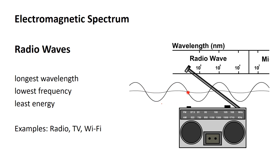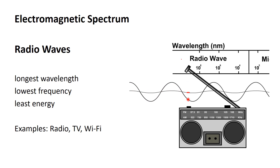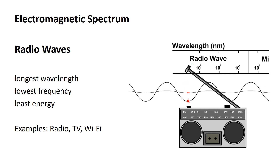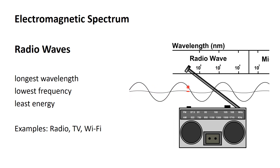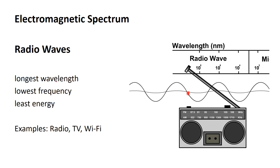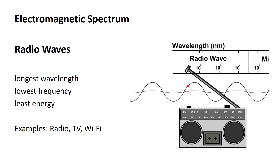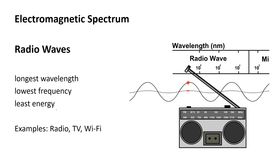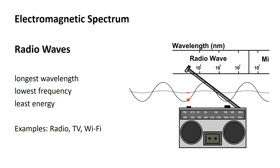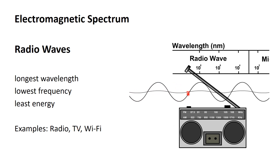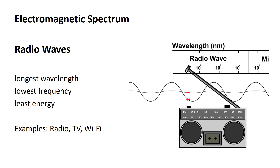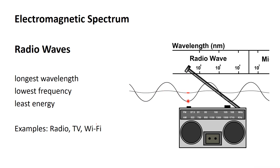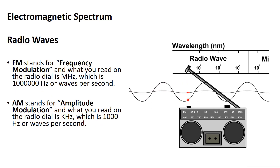Radio waves have the longest wavelength, so you find them all the way on the left of the spectrum diagram. They have the longest wavelength, but that means they have the lowest frequency and least energy. Some examples: your radio uses radio waves, TVs, and Wi-Fi devices use radio waves as well to communicate with each other.